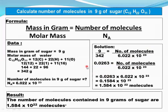Now we shift the Avogadro constant — since it is dividing on the right side, after shifting it becomes a multiplier on the left. So: 0.0263 × 6.022 × 10²³ = 0.1584 × 10²³. Wait — we obtain 0.5158 × 10²³. Writing in scientific notation, one digit must appear before the decimal point, so it becomes 1.5158 × 10²². Because shifting the decimal point increases the coefficient, so we decrease the exponent. The number of molecules in 9 grams of sugar is 1.5 × 10²² molecules.